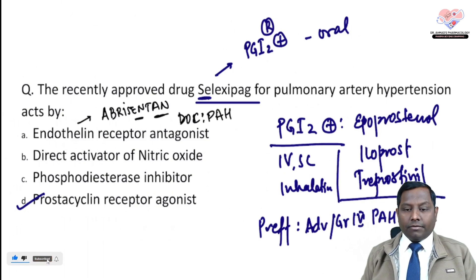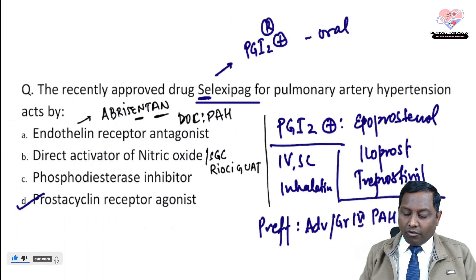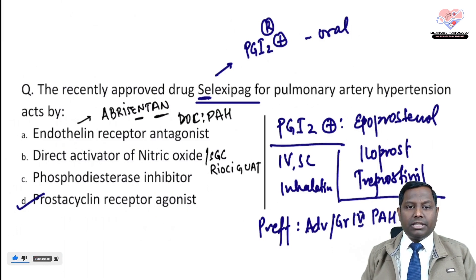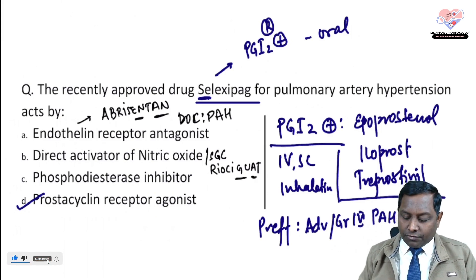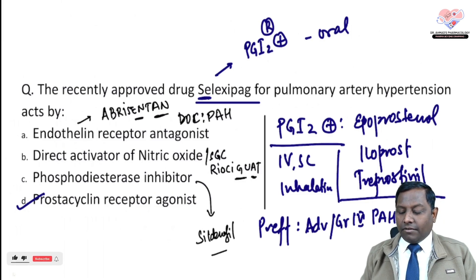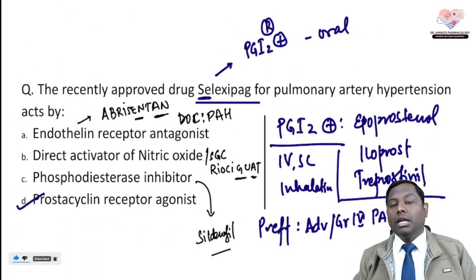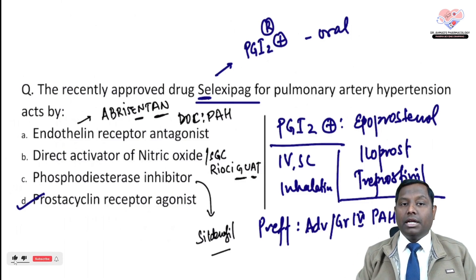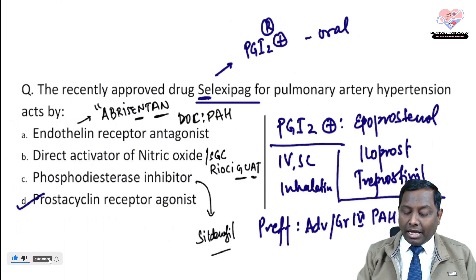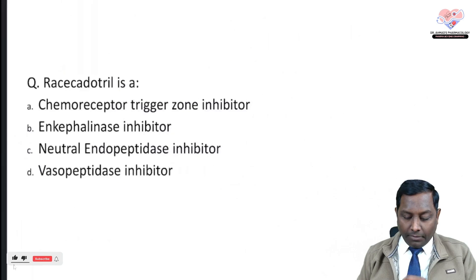Direct activator of nitric oxide or soluble guanylate cyclase refers to drugs like riociguat, which increases sensitivity for nitric oxide. Phosphodiesterase inhibitors include sildenafil — the all-time favorite drug — which was earlier used for pulmonary artery hypertension and is now preferred in erectile dysfunction, though it can still be used in PAH, commonly as a fixed-dose combination with ambrisentan. The correct answer for this question is D.